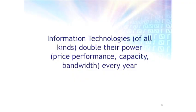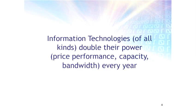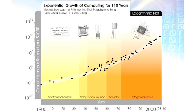It doesn't just apply to computation — it's really any technology where we can measure the underlying information properties. Here we have 49 famous computers on a logarithmic graph. The logarithmic scale hides the scale of the increase, because this represents a trillions-fold increase since the 1890 census. In the 1950s, there were shrinking vacuum tubes, making them smaller and smaller. That finally hit a wall — they couldn't shrink the vacuum tube anymore and keep the vacuum, and that was the end of the shrinking of vacuum tubes.